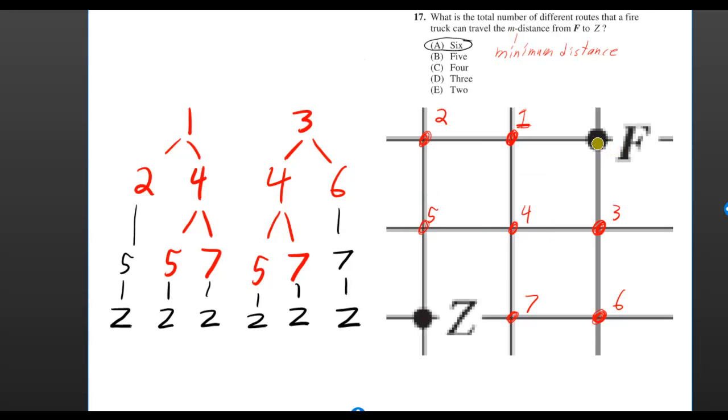I made a tree diagram of all the different choices you can make as you're going from F to Z. You can first go to point 1 or to point 3.